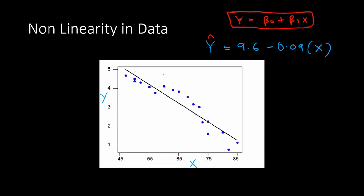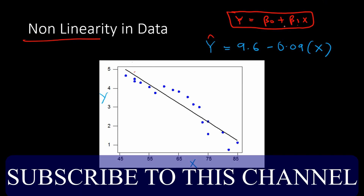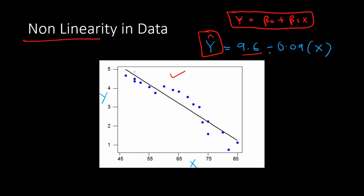See this data on the screen — this data looks nonlinear. We have put a linear regression line into it and it certainly doesn't fit the data. The linear regression is represented by the equation y = β₀ + β₁x, where β₀ and β₁ are the parameters to be estimated. When we estimated this equation using this data, we found that ŷ = 9.6 − 0.09x.